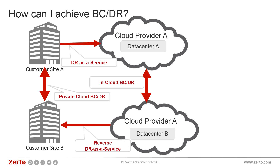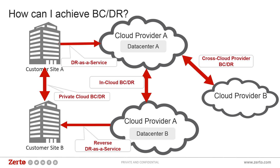Another interesting use case is reverse disaster recovery as a service. Cloud providers tend to refresh their environments faster because they want to offer the latest services. So you might want the cloud for your production everyday environment, and they'll maintain slightly older hardware at their own site for disaster recovery. And we're seeing more and more cross-cloud provider BCDR — the ability to do disaster recovery between Zerto cloud ecosystem providers. Pat, you brought this up as a particular use case.